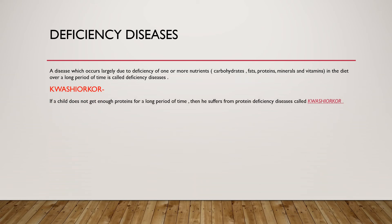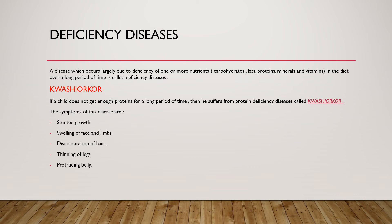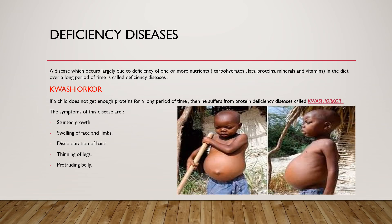The first deficiency disease is Kwashiorkor. If a child does not get enough protein for a long period of time, they suffer from protein deficiency called Kwashiorkor. Symptoms include stunted growth, swelling of face and limbs, discoloration of hair, thinning of legs, and a protuberant belly.